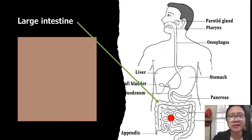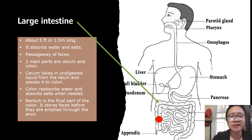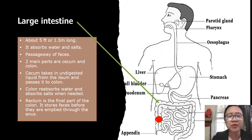From the small intestine, the food moves into the large intestine, which is about 5 feet or 1.5 meters long. It absorbs water and salts and is a passageway of feces. The two main parts are the cecum and the colon. The cecum takes in undigested liquid from the ileum and passes it into the colon. The colon reabsorbs water and absorbs salts when needed. The rectum is the final part of the colon and stores feces before they are emptied through the anus.